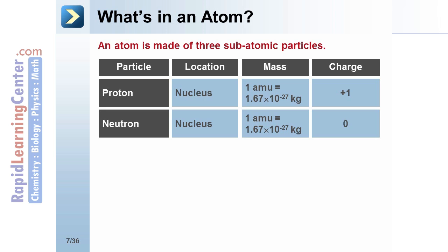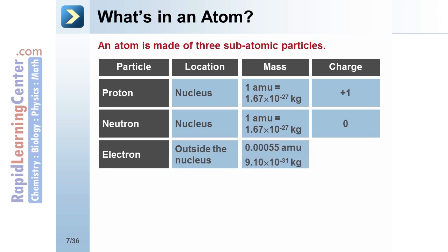Many people confuse neutrons and electrons and think that neutrons are negative because it starts with an N. Instead, think that neutrons are neutral with a charge of 0.